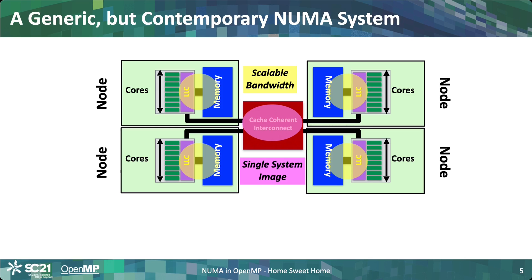That interconnect is called a cache coherent interconnect — that's a world in itself. The bottom line is that a cache coherent interconnect provides what we call a single system image. To you this appears like a system with a bunch of memory and a bunch of cores and caches. You don't see the underlying topology or how complicated it is. When you use a tool like top, it will just report how many cores you have, how much memory there is, etc. There are special commands to query the system, but general Linux commands will hide this complex architecture from you, because of the cache coherent interconnect. It does a lot of magic — it will get you your variables when you need them — transforming this system into a single system image.